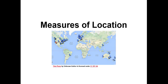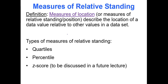Our first stop will be measures of location. As the name suggests, we talk about the location of one data value with regard to the entire data set. Measures of location, or measures of relative standing or position — these terms are used interchangeably depending on the textbook — describe the location of a data value relative to other values in a data set.